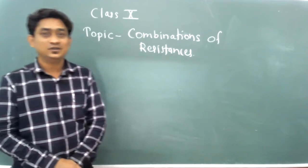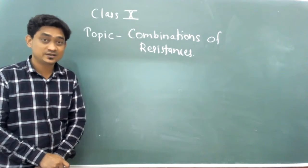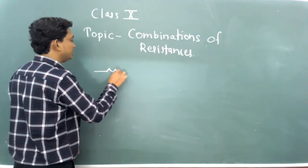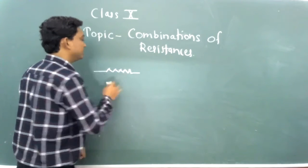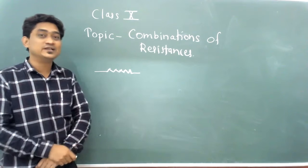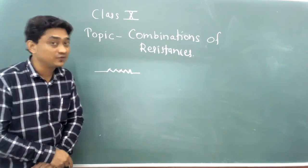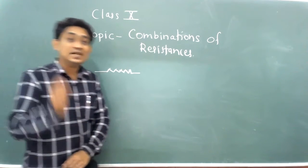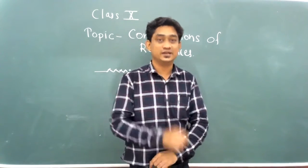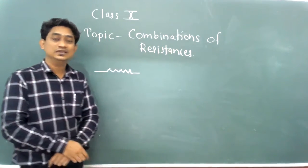First of all, we should look at what is meant by resistance. We can represent resistance with this symbol. What is the work or function of resistance in an electric circuit? Resistance opposes the motion of current — that is the function of resistance.